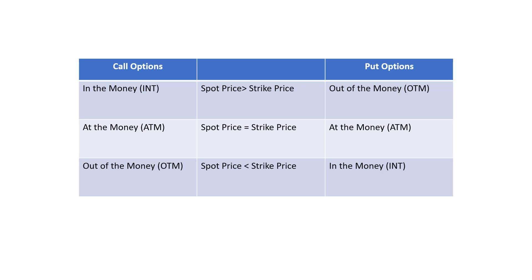When the spot price equals the strike price, the option is at the money (ATM). For a call option, when the spot price is below the strike price, it is out of the money (OTM). For a put option, when the spot price is higher than the strike price, it is out of the money.